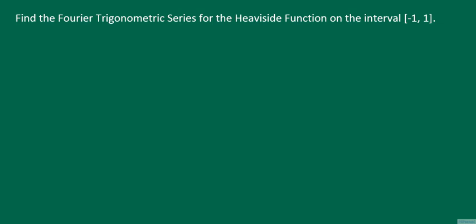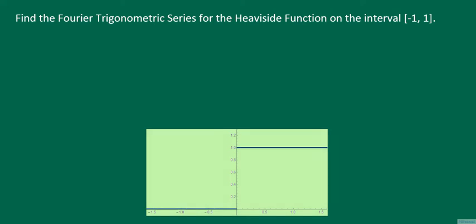In this lecture, we find the Fourier trigonometric series for the Heaviside function on the interval from minus 1 to 1. The graph of the Heaviside function is given below. The value of the function when t is greater than 0 is 1, while when t is less than 0, the value is 0. From the graph, one can see why the Heaviside function is also called the unit step function.